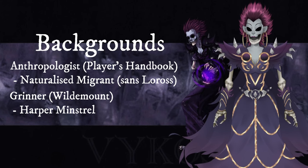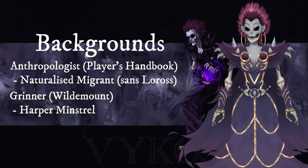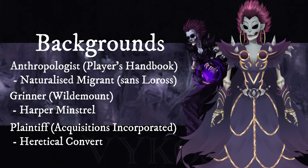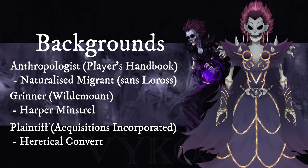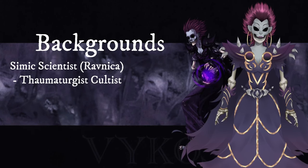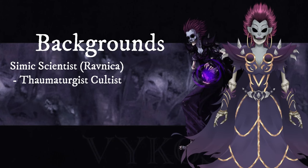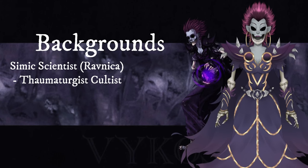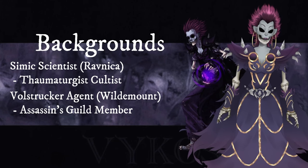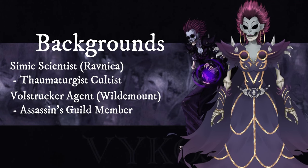A Grinner background from the Wildemount campaign setting would be perfectly suited to being a Harper minstrel seeking out and undoing tyranny across the world. A Plaintiff from Acquisitions Incorporated could be a convert to the heretical faith, having the means to travel to the Sunset Vale in pursuit of their new life. A Simic Scientist from the Ravnica setting is perfectly suited to be a member of the Thaumaturgist cult, which worships technological innovation and human progress even above the gods. A Volstrucker Agent from Wildemount could be a guild assassin associated with groups such as the Royal Heralds, the Fireknives, or the Nightblades.